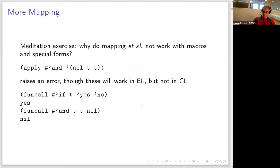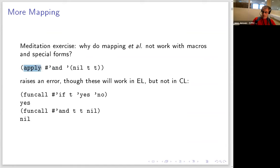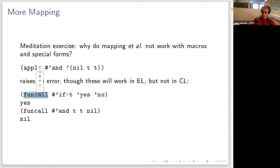Now we'll talk about mapping. First, a meditation: why does this not work — why can't I apply `and` as a function, passing nil, t, and t to get a boolean? It won't work in Emacs. Interestingly, calling `if` with t, 'yes, and 'no does work in Emacs Lisp, whereas in Common Lisp it would not. Think about why.